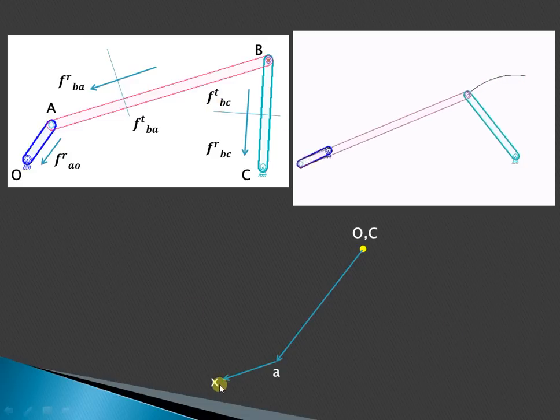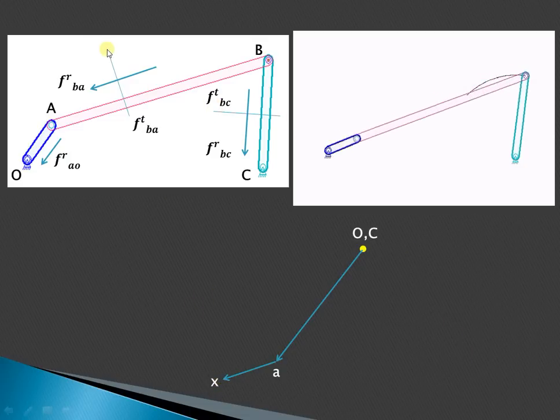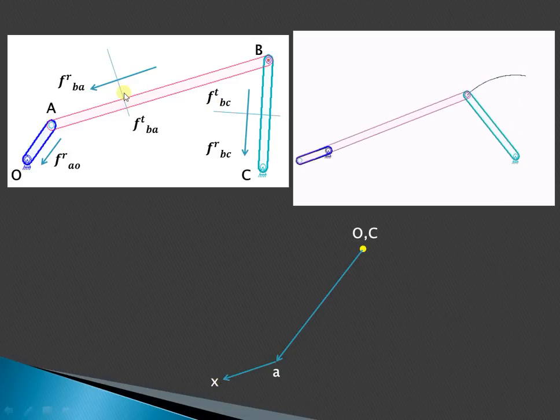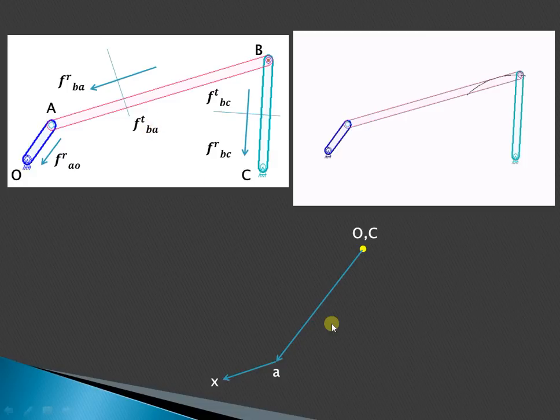From this point X, draw a line parallel to the link representing the tangential acceleration of B with respect to A.